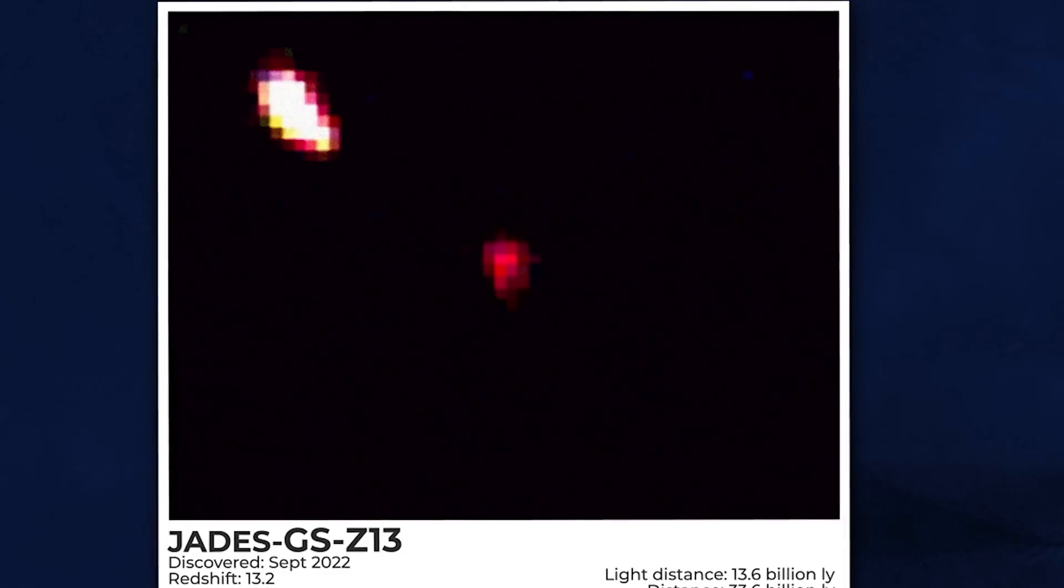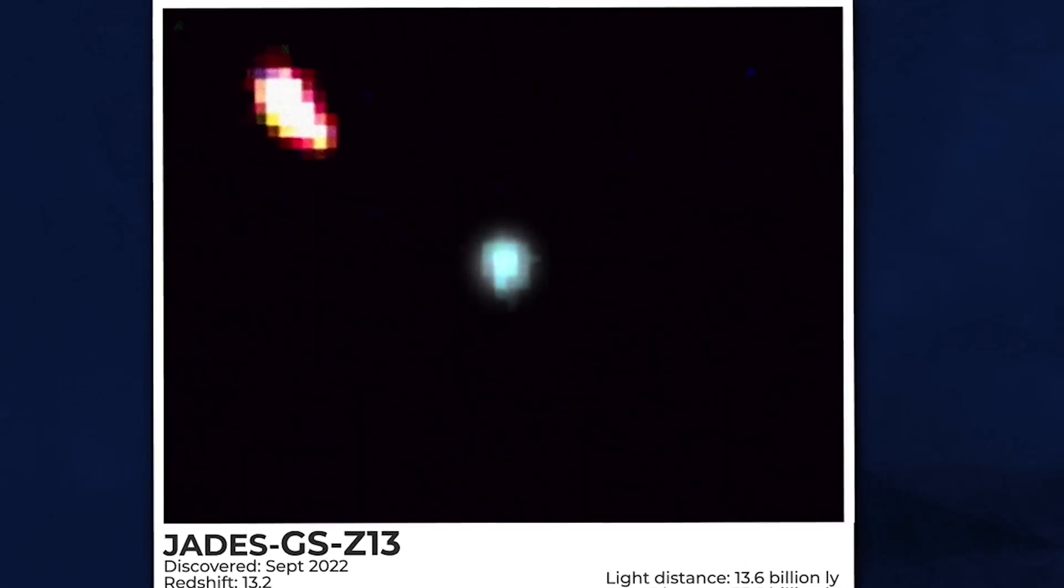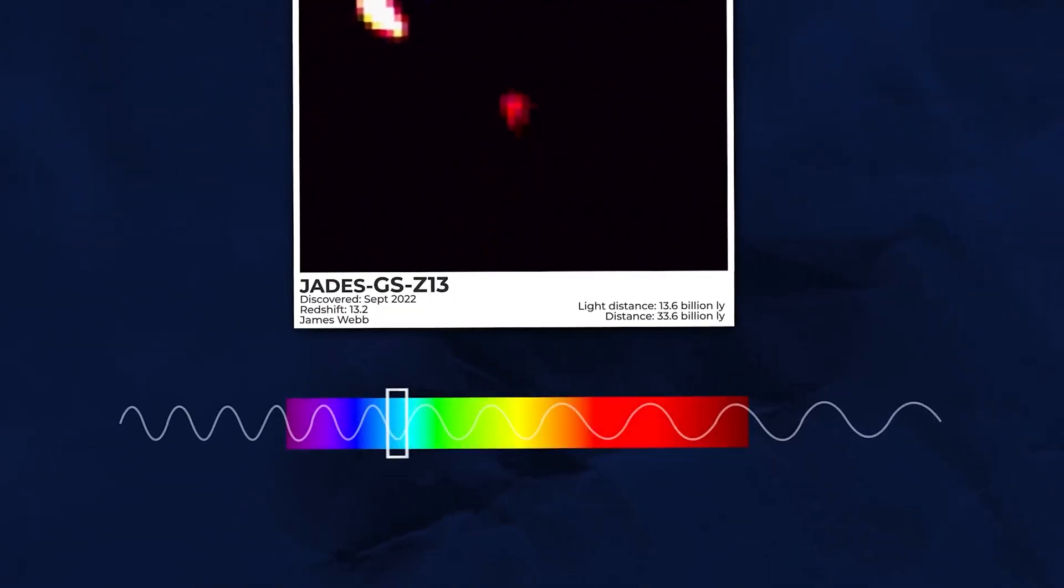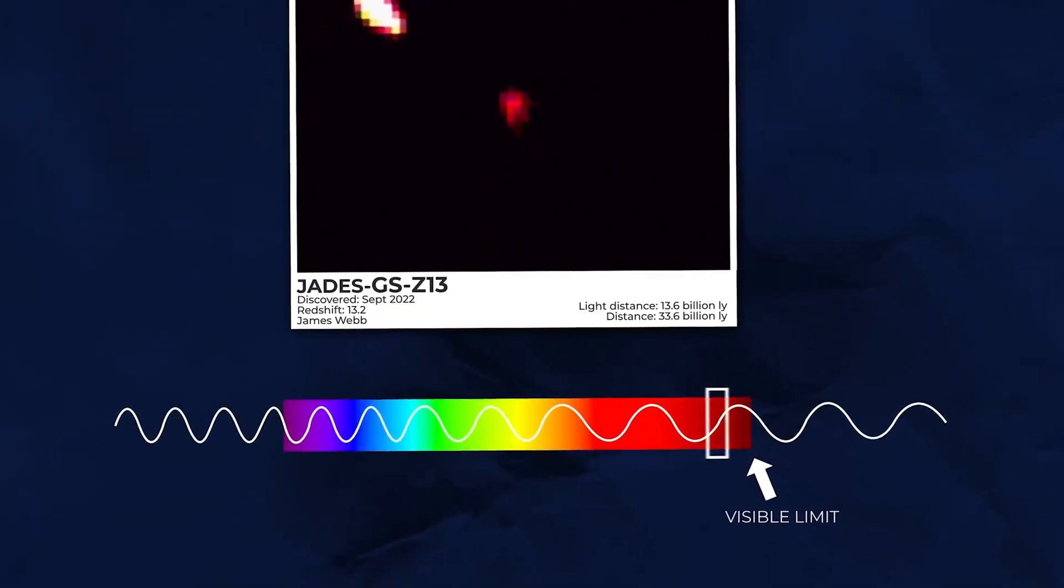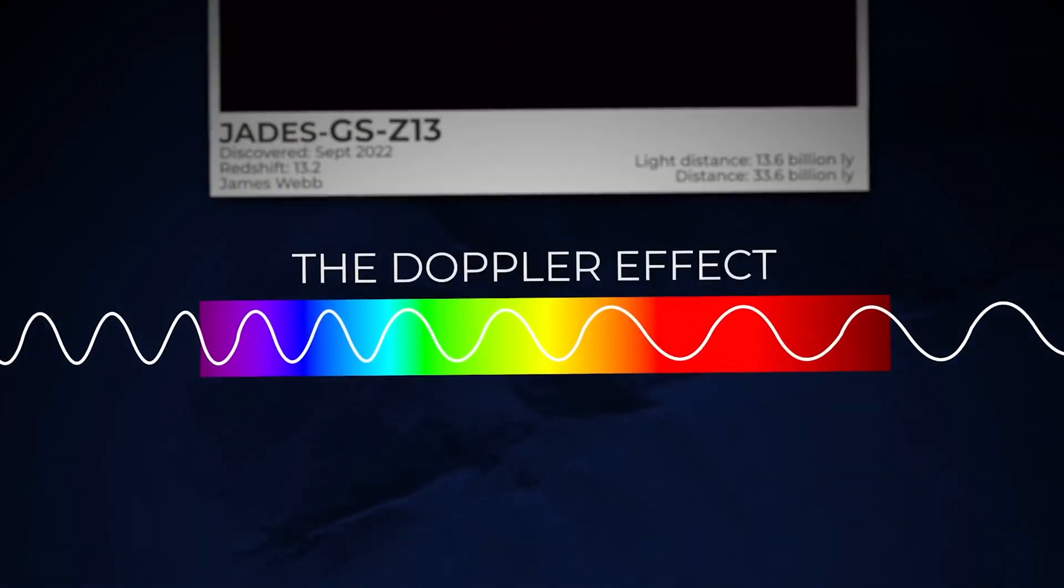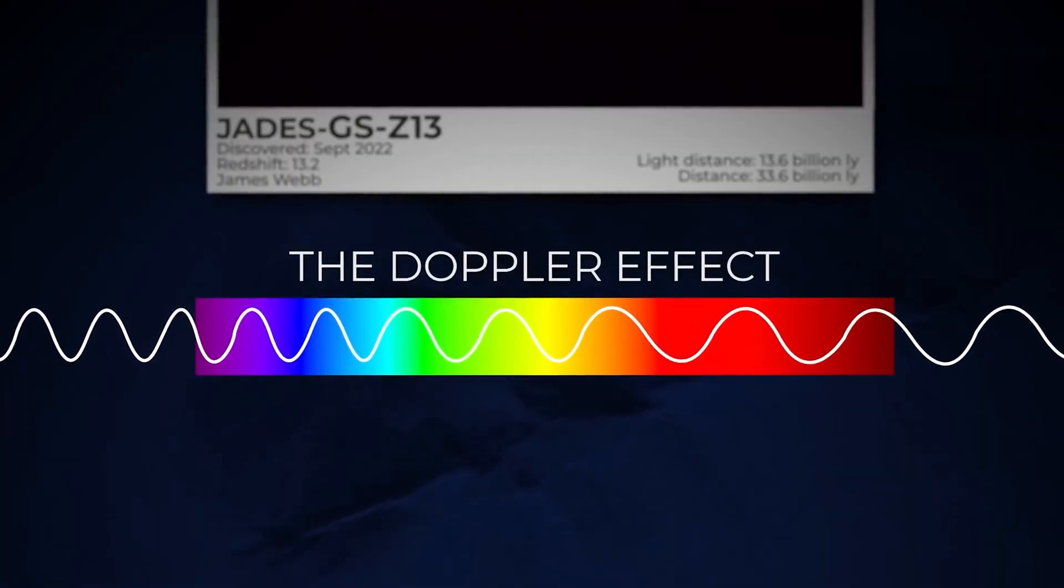The same is true of light. When a light source, such as a distant star, moves toward us, the light we perceive shifts towards bluer hues. On the other hand, when the light source moves away from us, the light shifts towards redder hues. This phenomenon is called redshift.